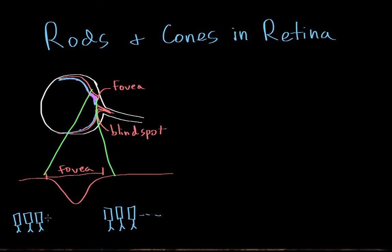Cones on the other hand are found in a really high concentration near the fovea, and in the periphery of the eye there might only be a few cones every now and then.